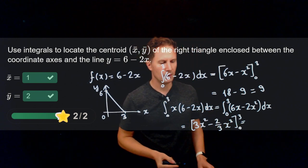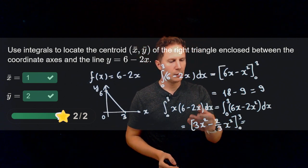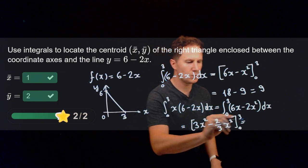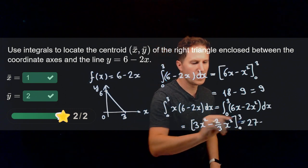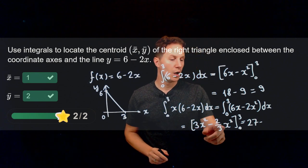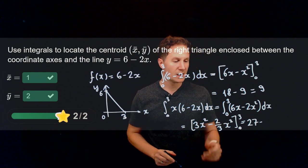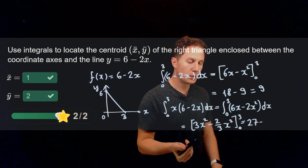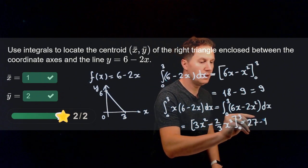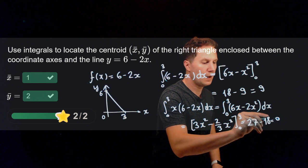Evaluating at the limits we get 3 times 3 squared, so that's 27, from which we need to subtract 2 thirds of 3 cubed, which is again 27. 2 thirds of 3 cubed is 18, so we get 9 again.